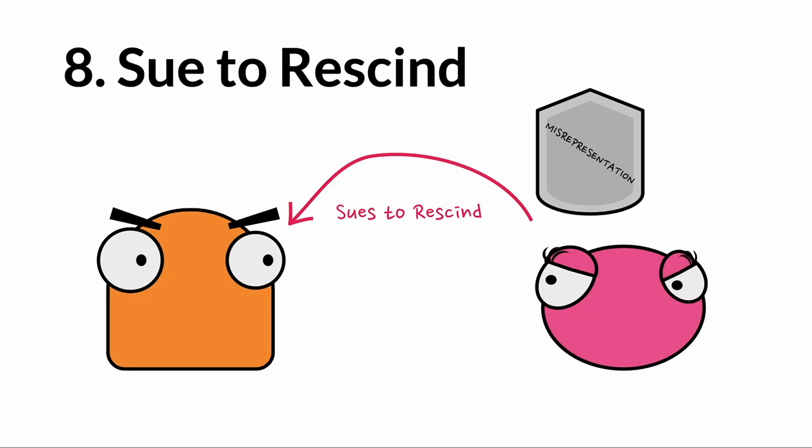Bo made a statement of fact before Barb and Bo entered into the agreement. That statement was false — it is not true there are no roaches. In this case it was likely fraudulent, and even if it weren't, it would very likely be material. It doesn't need to be both: if it's fraudulent, it doesn't need to be material, and if it's material, it doesn't need to be fraudulent — one or the other will do.